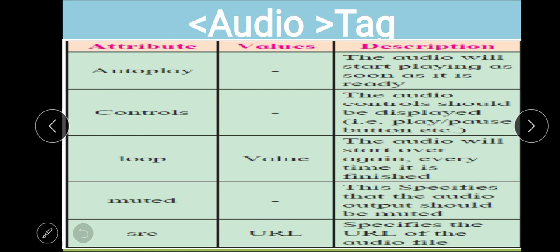The audio tag has various attributes. There are five attributes associated with the audio tag: autoplay, muted, and controls are empty attributes — meaning they take no value. Loop and src are the remaining attributes. These five attributes are implemented together with the audio tag.